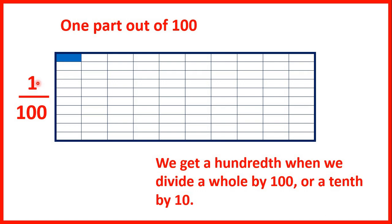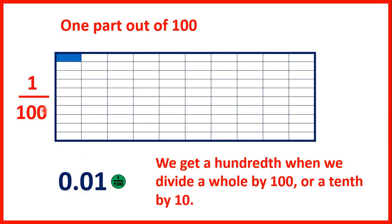And we can write one-hundredth as a decimal — that's 0.01. The first digit after the decimal point is the tenths digit, but the second digit after the decimal point is the hundredths digit, which tells us how many hundredths we have. The place value counters write one-hundredth as a fraction, but we could have written 0.01, because that's the same as one-hundredth.